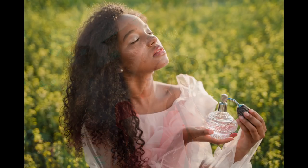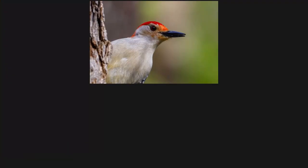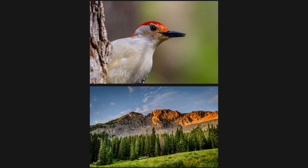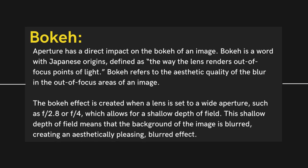Understanding and controlling depth of field is an important aspect of photography, as it can greatly affect the look and feel of your photos and help you create more engaging and visually appealing images. For example, an aperture of f/1.8 will have a shallow depth of field, while an aperture of f/16 will have a deeper depth of field. This effect can be used creatively to draw attention to the subject and make it stand out from the background. Aperture has a direct impact on the bokeh of an image. Bokeh is a word with Japanese origins, defined as the way the lens renders out-of-focus points of light.